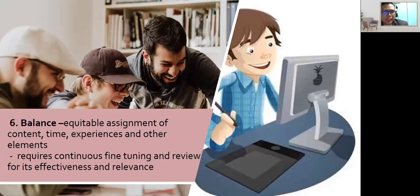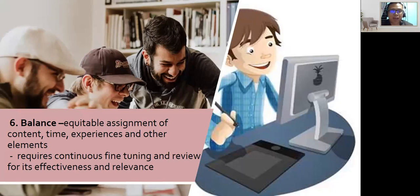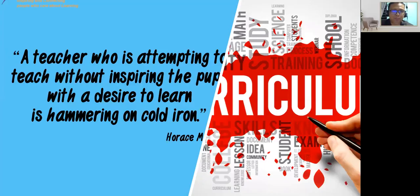The sixth dimension is balance — equitable assignment of content, time, experiences, and other elements. It requires continuous fine-tuning and review for effectiveness and relevance, making the delivery of content balanced.